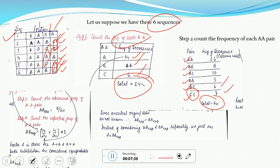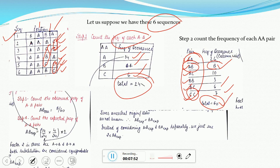The third step is to count the observed frequency of each amino acid pair. For AB, the observed frequency is 8 divided by 60 — because the frequency of AB is 8 and the total number of pairs is 60. So 8/60 gives us the observed frequency of AB.